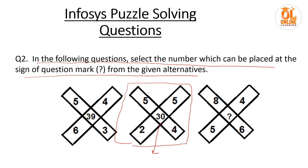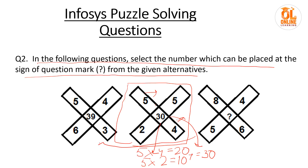Here you can see that 5 and 4 are there — 5 into 4 is 20, and 5 into 2 is 10, then 20 plus 10 equals 30. You get the logic here. But is it right or not? You have to check it in the other figure. Let us check: 5 into 3 is 15, plus 6 into 4 is 24, you get 39. So your logic is right.